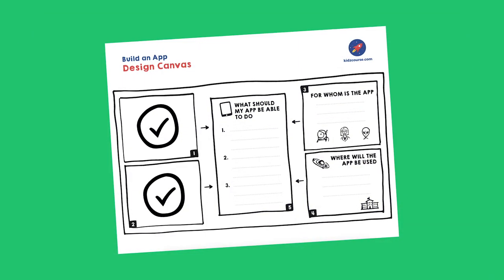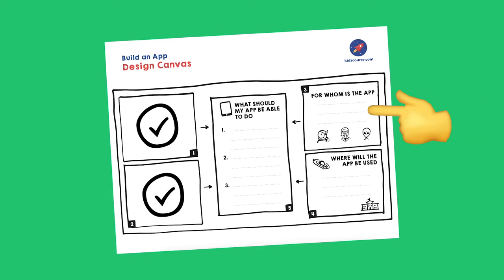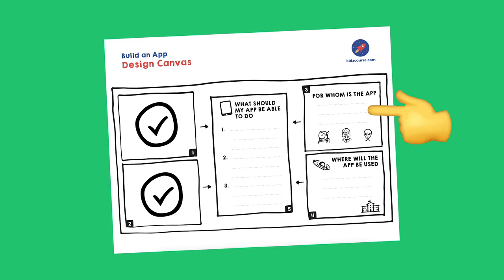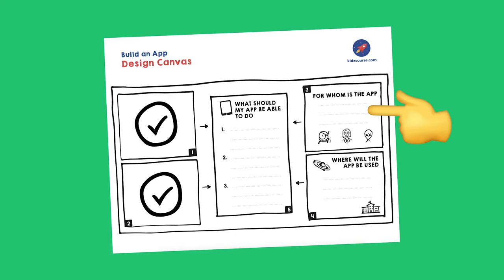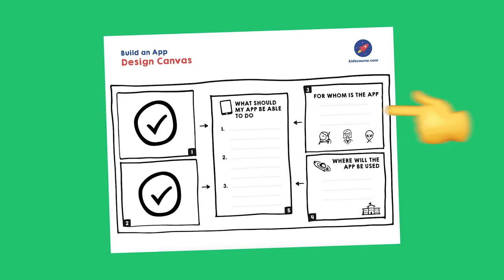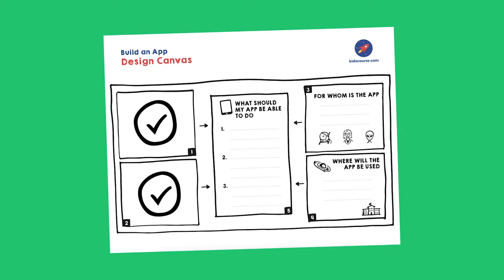We now go to the right-hand side of the canvas. For whom is your app intended? For yourself or for the teacher? Your mom or dad? Or maybe for your dog? Click on pause again and write down in box number three for whom your app is intended.